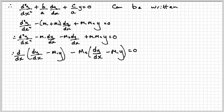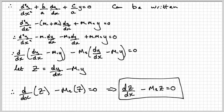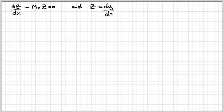Next, I'm going to let z equal dy/dx minus m1·y, so I can now write the previous equation in the form: dz/dx minus m2·z equals zero. To summarize, we have this result and also that z equals dy/dx minus m1·y.